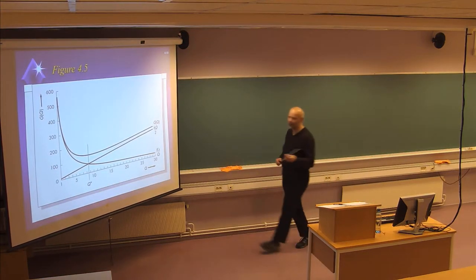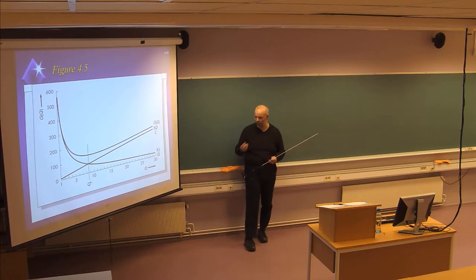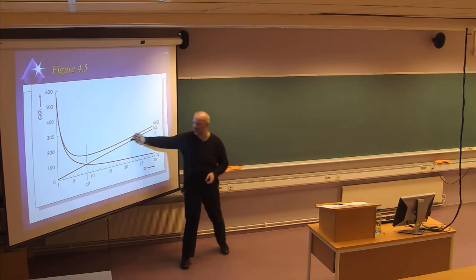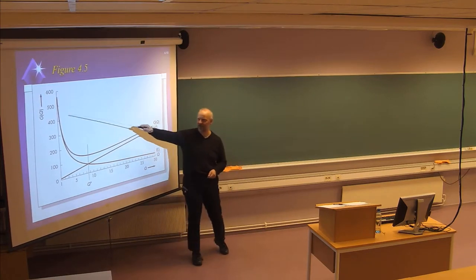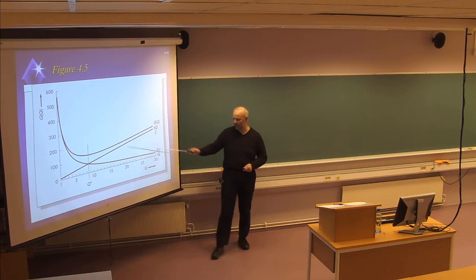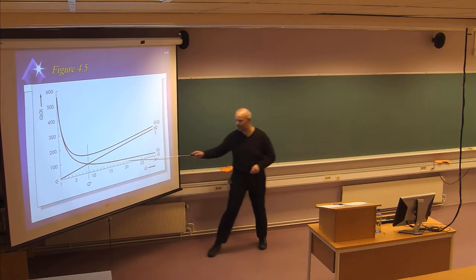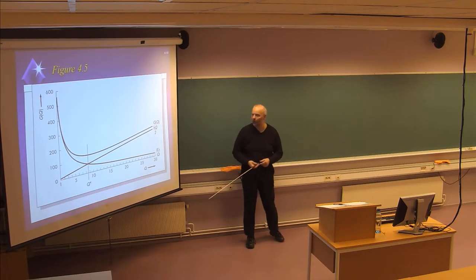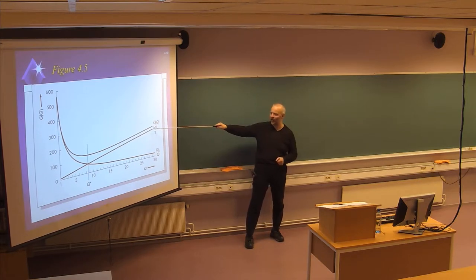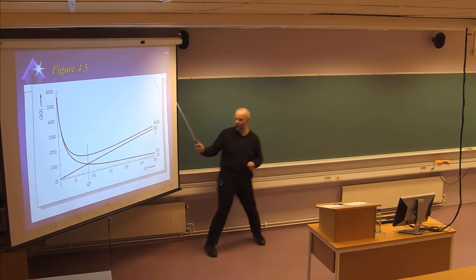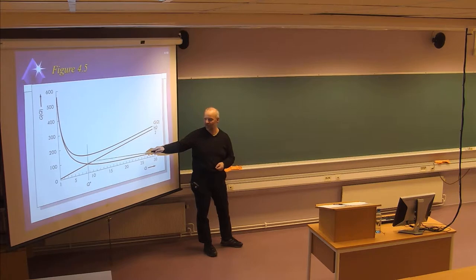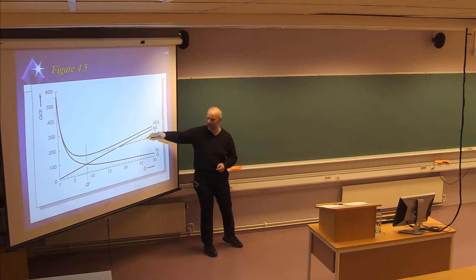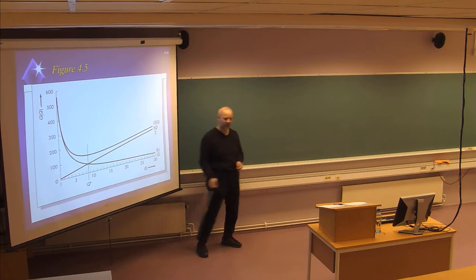Here we can see the cost curve with the two most relevant cost elements. One is the holding cost — the cost of storing inventory — which is a linear function. The other is the ordering cost, which is a hyperbolic curve that decreases as order size increases. The EOQ value — the optimal Q — is at the intersection where these two cost functions are exactly equal, which is also the minimum point of the total cost function.